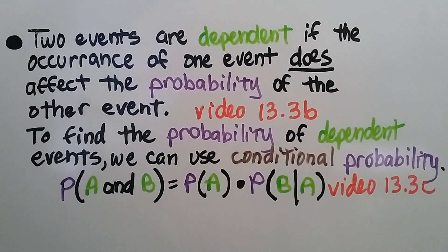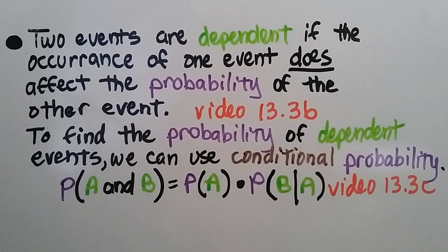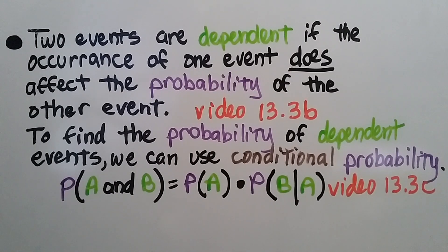Two events are dependent if the occurrence of one event does affect the probability of the other event — we talked about that in the second video. And to find the probability of dependent events we can use conditional probability, which we did in the third part of this lesson.